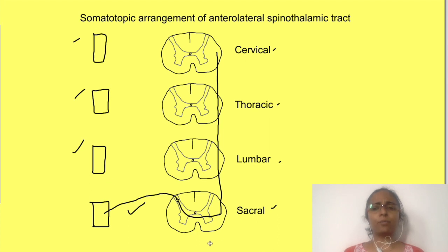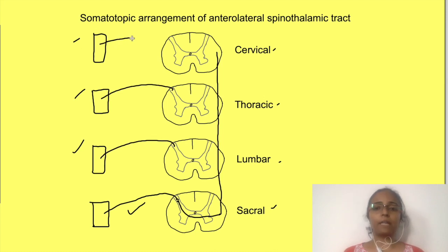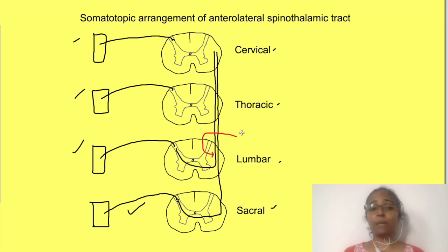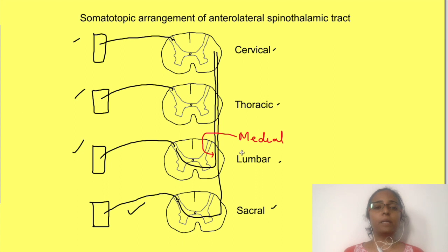Suppose the pathway we saw earlier was from the sacral region. Lumbar, thoracic, and cervical fibers ascend from successively higher regions. Fibers from the lumbar region enter the lumbar spinal cord, cross, and then ascend. In the spinal cord, they ascend medial to the sacral fibers, as if the sacral fibers are pushed laterally.